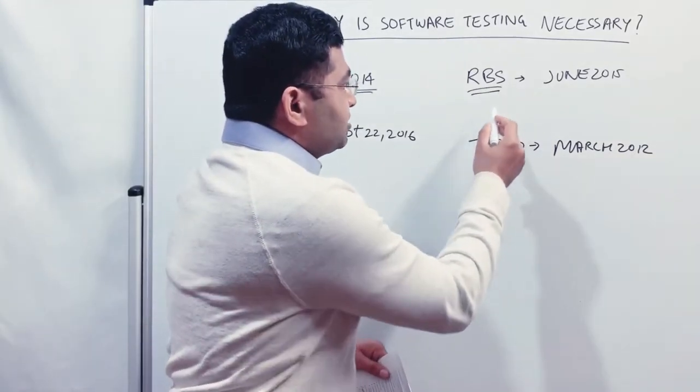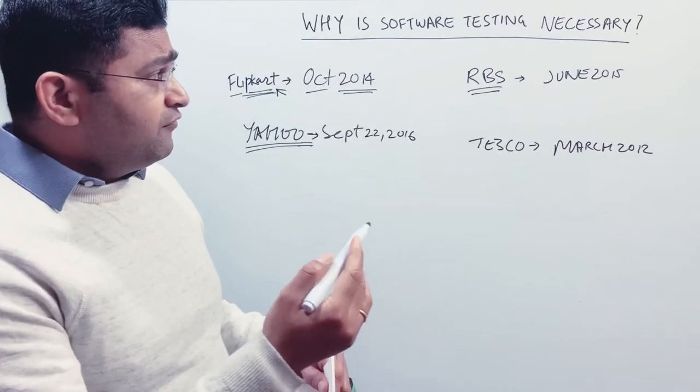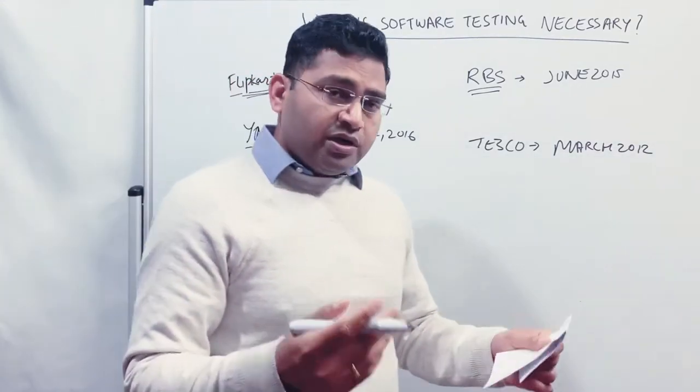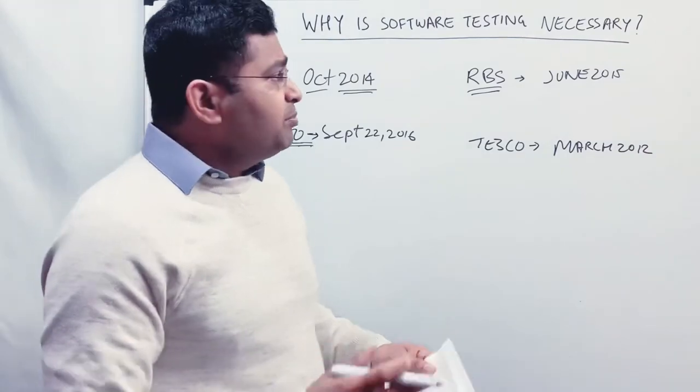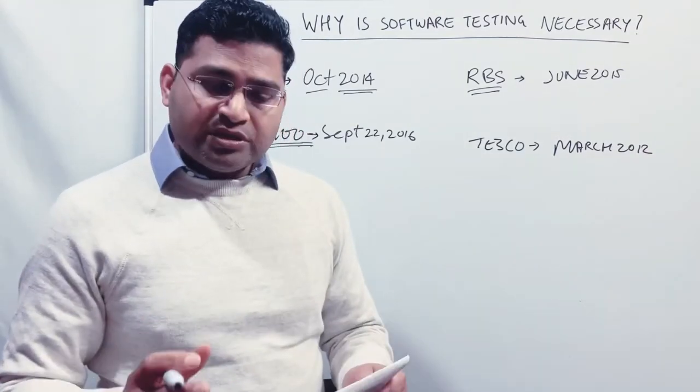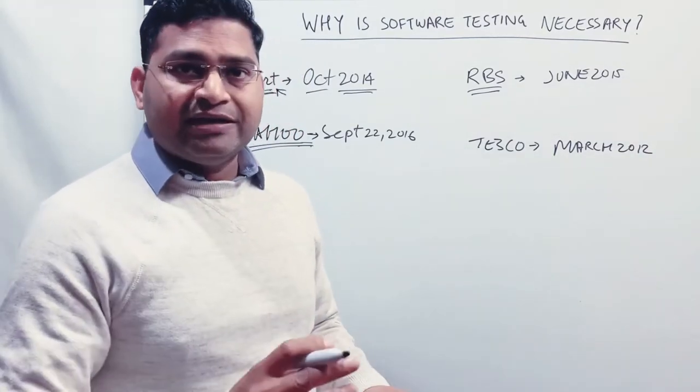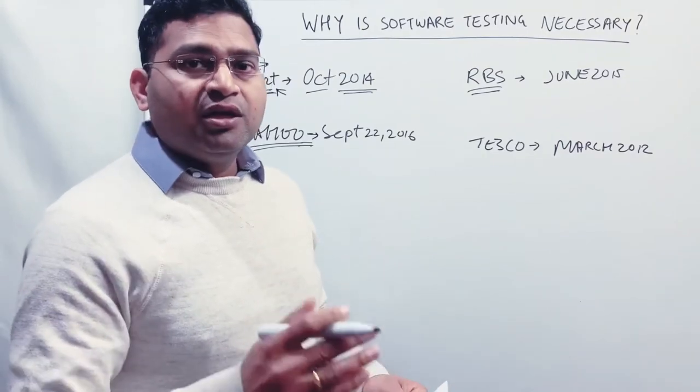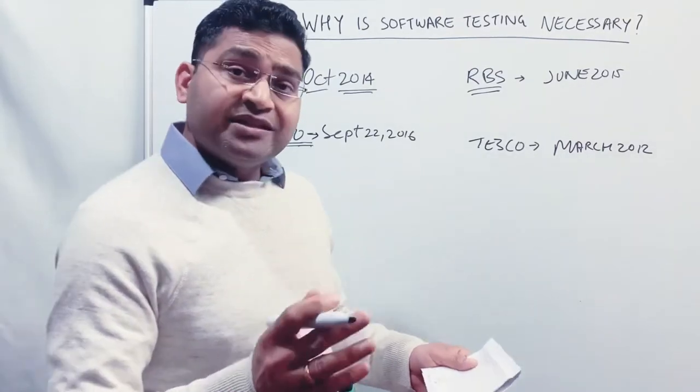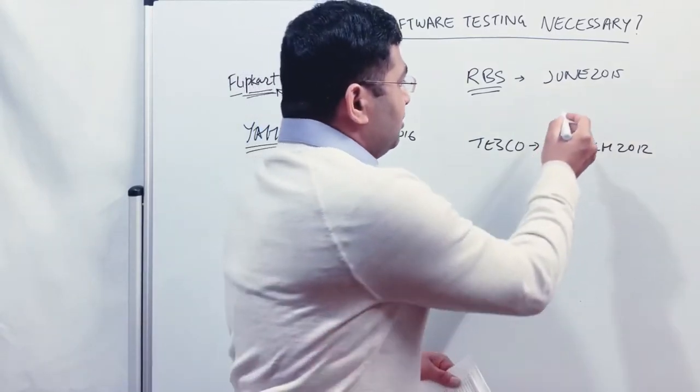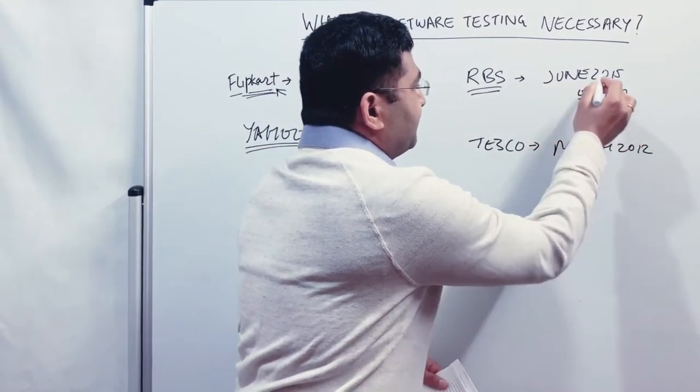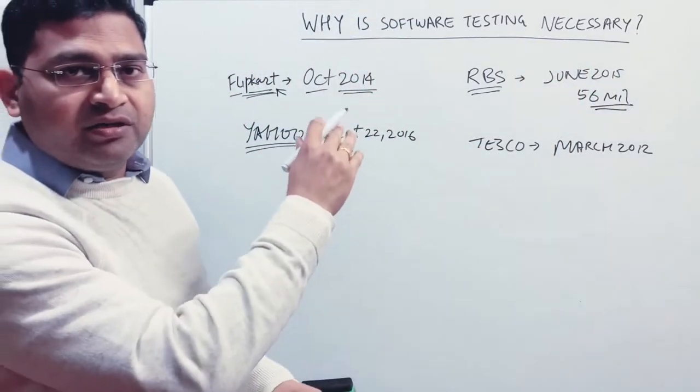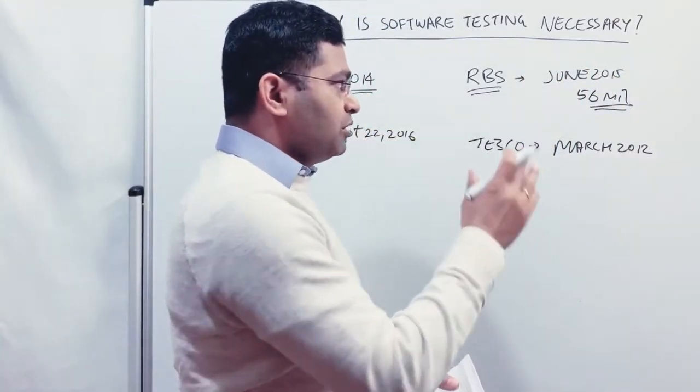Now, Royal Bank of Scotland, RBS, in June 2015, there was a technical glitch or failure in the software because of which they were not able to process six lakh payments. And those payments failed because of which they were fined 56 million pounds. So 56 million pounds they were fined because of that particular failure that happened in June 2015.